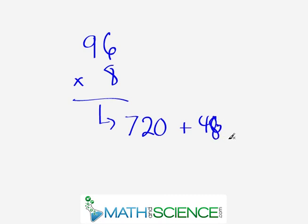So we'll add 48 to the answer there. And we're going to add the same way we add before. So we start with 720, 730, 740, 750, 760, 768.